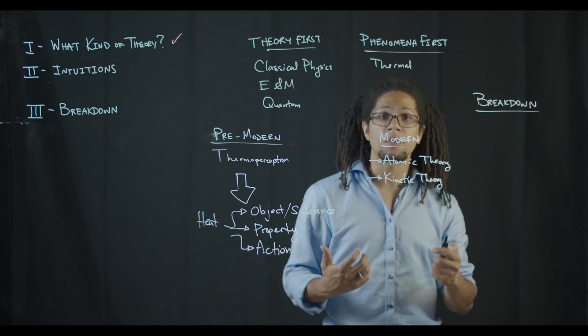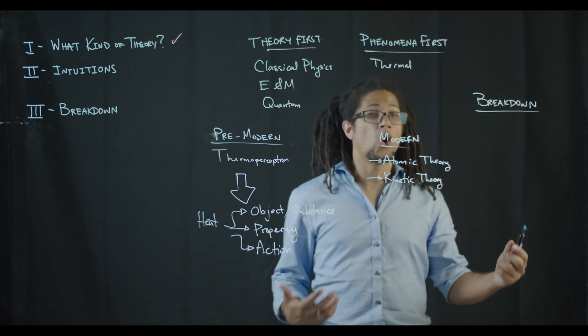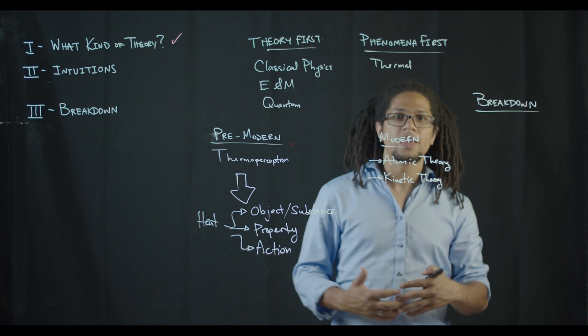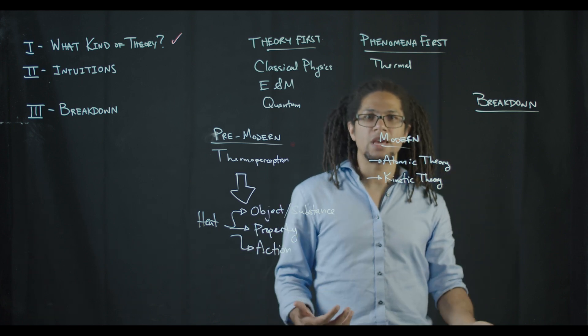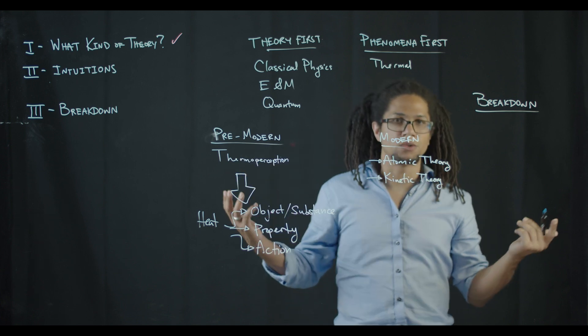Because we're thinking in a phenomena first way, we need to construct a series of models which overlap but aren't necessarily strictly coherent with each other that explain the phenomena that we're interested in. Whatever we think of as being thermal phenomena, we need to come up with overlapping theories to describe.